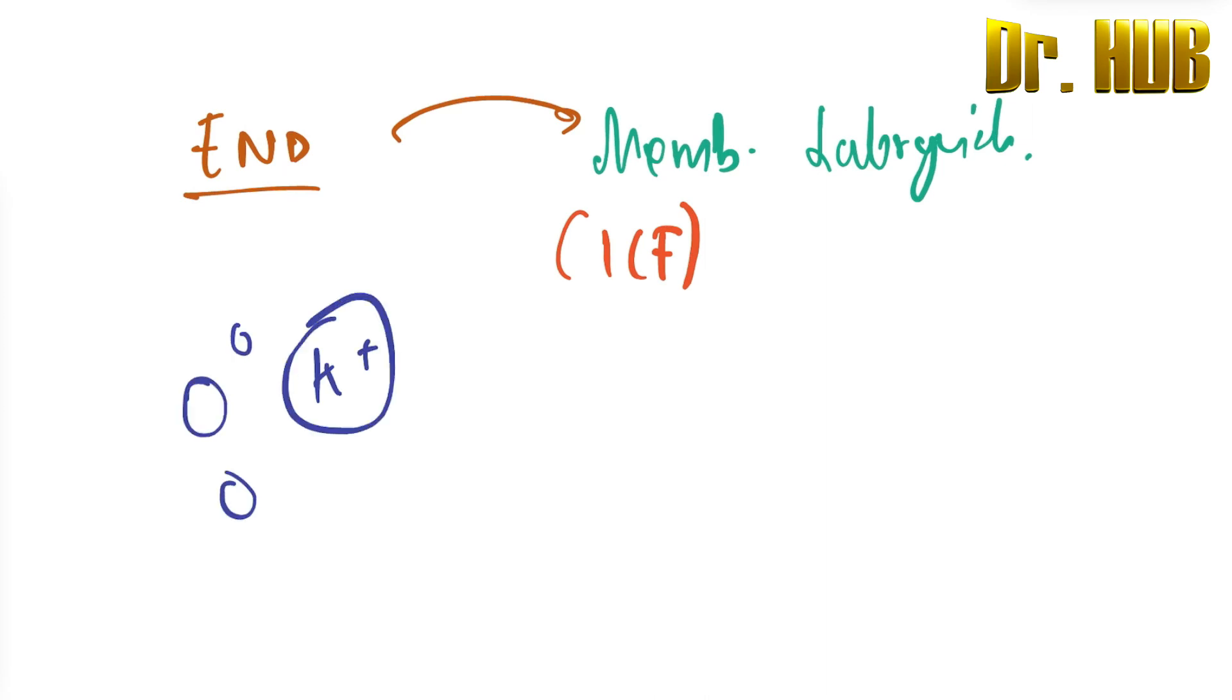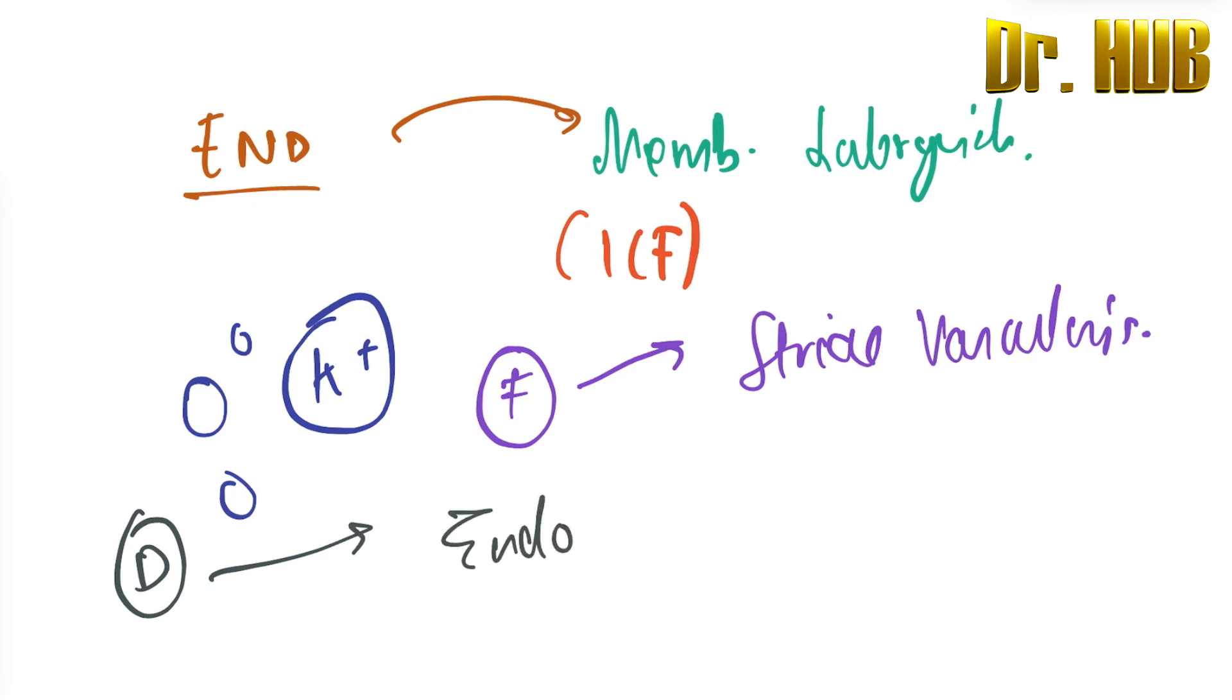And what is it? What about the formation? The formation is it is produced via the stria vascularis. So this is nothing but the endolymph. Then how do you drain? The drainage is by it is absorbed through the endolymphatic sac. So absorbed by the endolymphatic sac. It is absorbed.